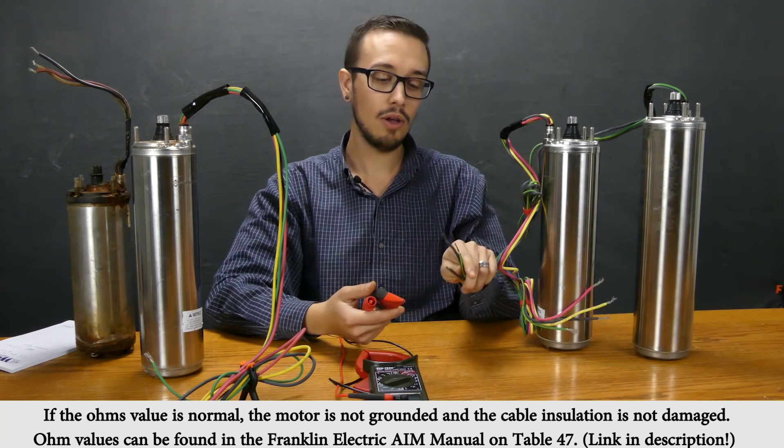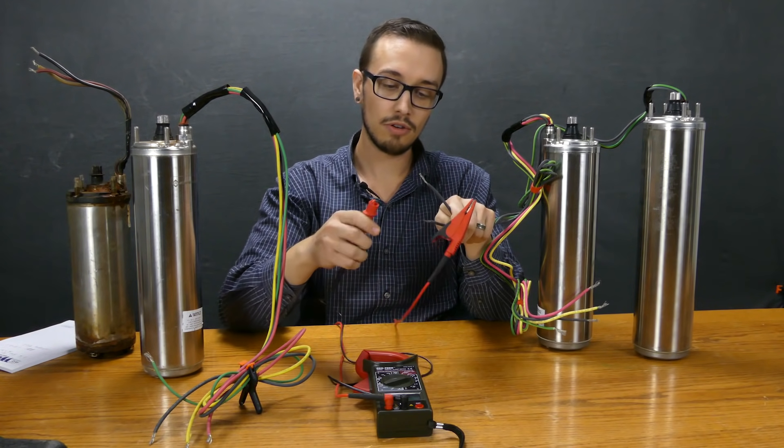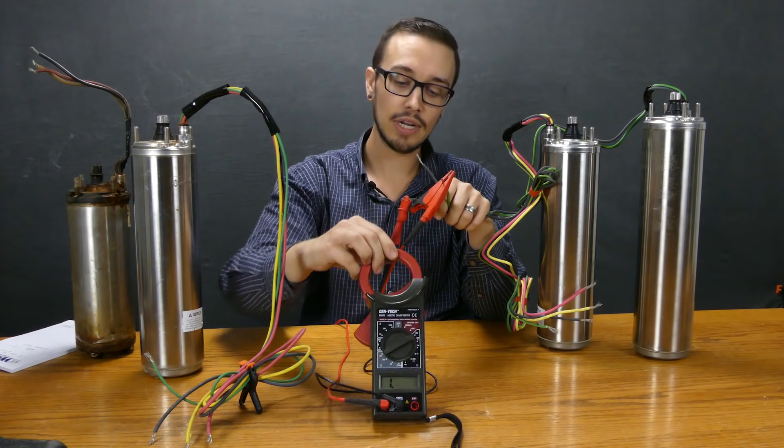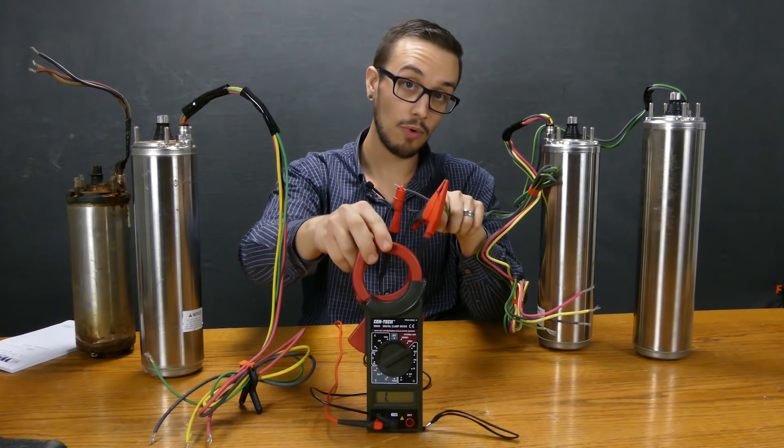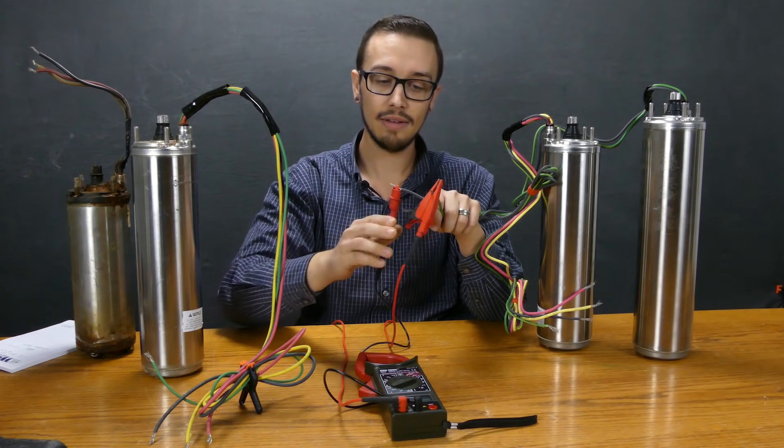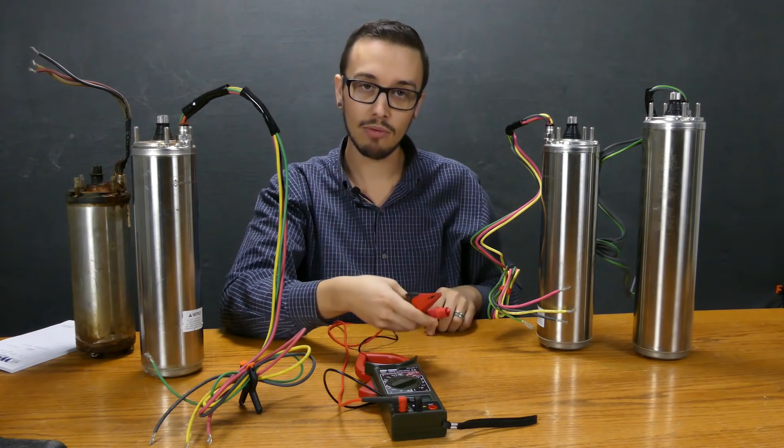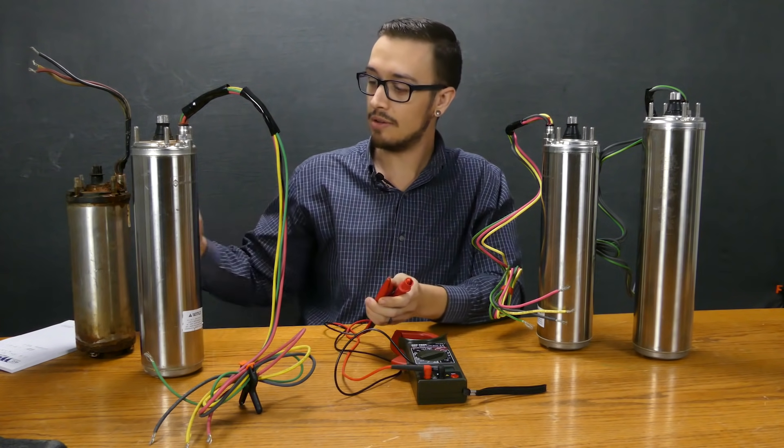We can do the same thing with the two wire motor. It just has the two leads, so one to ground and then one to here and we've got one again. And one to this one and we've got one again on that one. Obviously these are brand new motors just fresh out of the box so we're not going to find any problems with them, but that's exactly what we're looking for.